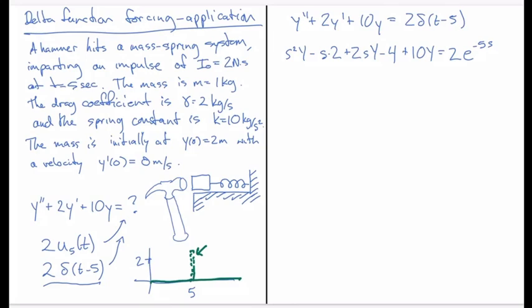Now we just solve this for y. So we get y of s is equal to 2e to the minus 5s, and then we bring these terms here over to the other side, and that gives us a plus 2s plus 4, and then divided by everything that came from the left-hand side, which will be s squared plus 2s plus 10.